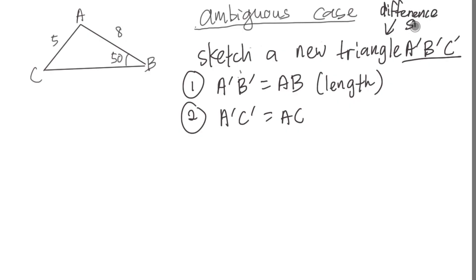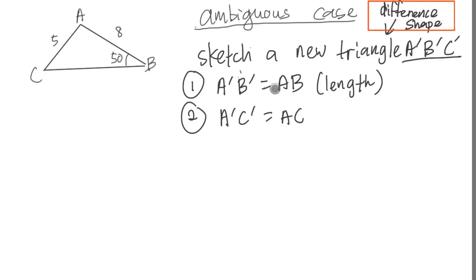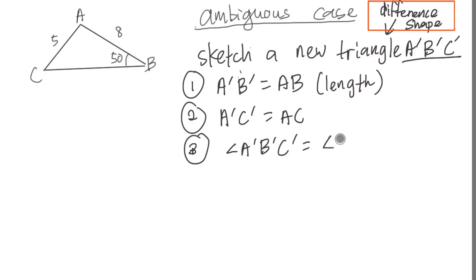Different shapes means you cannot draw a similar triangle — your new triangle needs to be a totally different shape. Normally the question gives a maximum of three conditions. The last condition might say angle ABC must be the same as the old angle ABC.